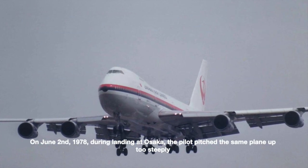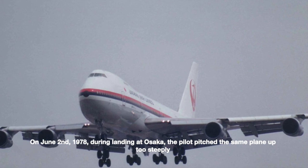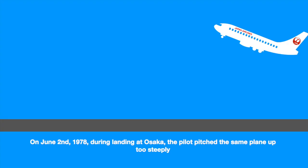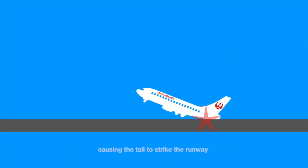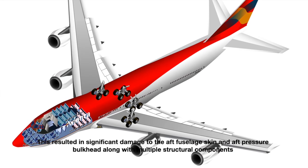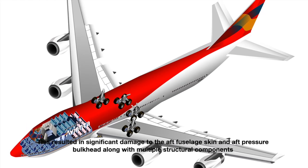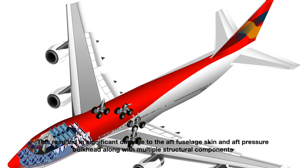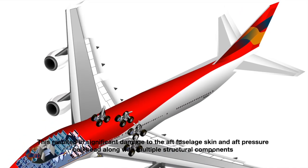On June 2, 1978, during landing at Osaka, the pilot pitched the same plane up too steeply causing the tail to strike the runway. This resulted in significant damage to the aft fuselage skin and aft pressure bulkhead along with multiple structural components.